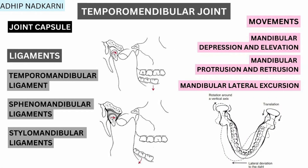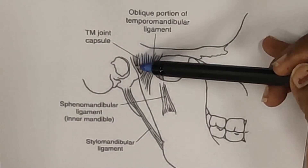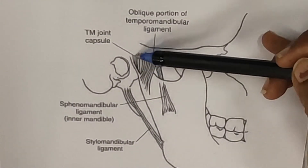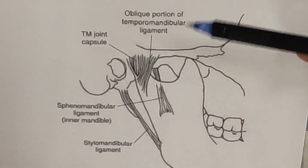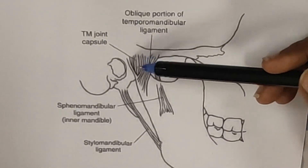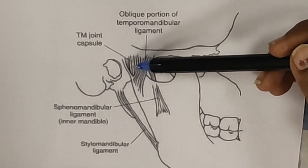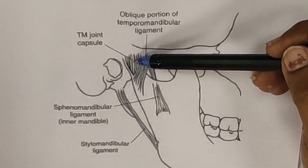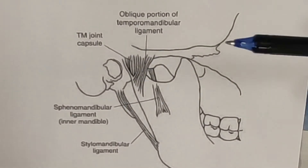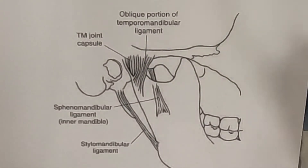Let's look at the ligaments and other soft tissue structures of the temporomandibular joint. As is natural for any synovial joint, we have the temporomandibular joint capsule, which surrounds the joint and ensures stability. Other than the capsule, there are also some additional reinforcements in the form of three main ligaments.